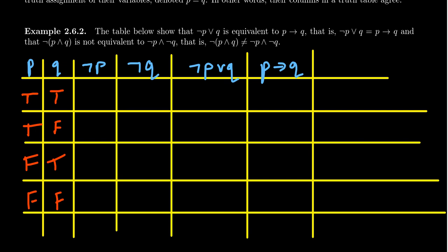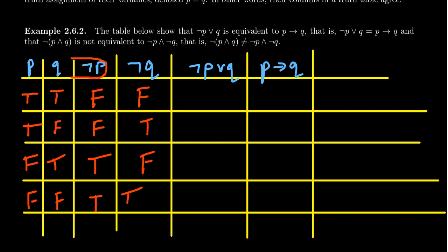For not P and not Q, we just switch the signs: false-false, false-true, true-false, and true-true. Then we get to the compound statement we're interested in, not P or Q. Remember, an or statement is going to be true if any part of it is true. So we end up with true, false, true, and true.